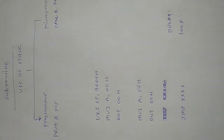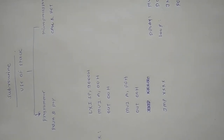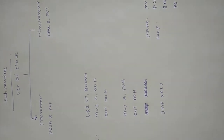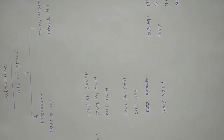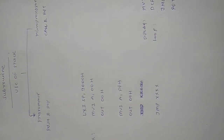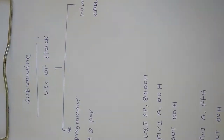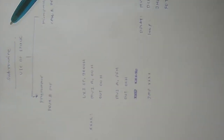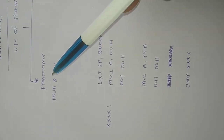Today we'll learn about subroutines. A subroutine is basically a program written separately from the main program to avoid repetitions in the main program. This concept of subroutine is basically associated with the use of stack. The use of stack is divided into two parts.